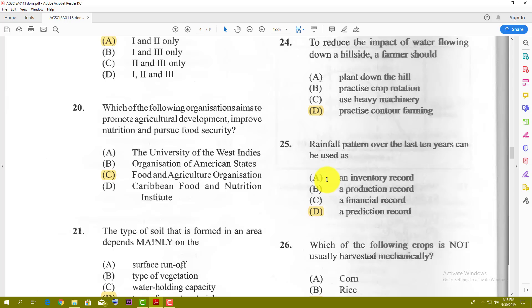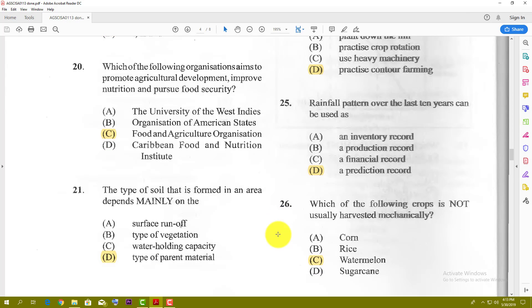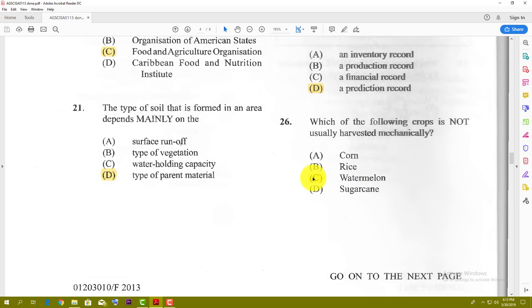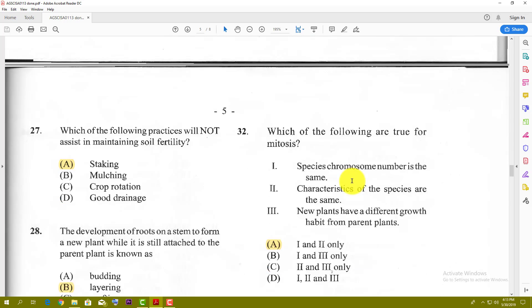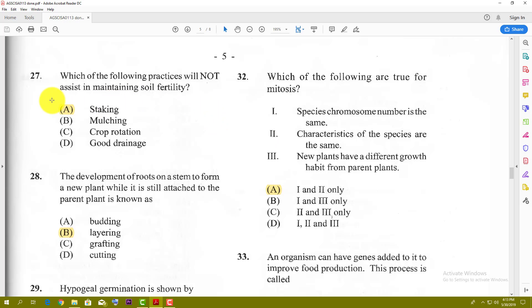Number twenty-five: rainfall patterns over the last ten years can be used as prediction records. You can use the records to predict rainfall—maybe rain might be ten inches this month, seven inches this month—so you can plan properly based on historical rainfall records. Number twenty-six: which of the following crops is not usually harvested mechanically? The best answer is watermelon. Watermelon tends to be very sensitive and bruises easily. They have different varieties of shapes and are harvested when mature, so you can't really use mechanical harvesting for watermelon. The others can be easily harvested mechanically. Number twenty-seven: which of the following practices will not assist in the maintenance of soil fertility? Of course, the answer is staking. All these can add to soil fertility except for staking.